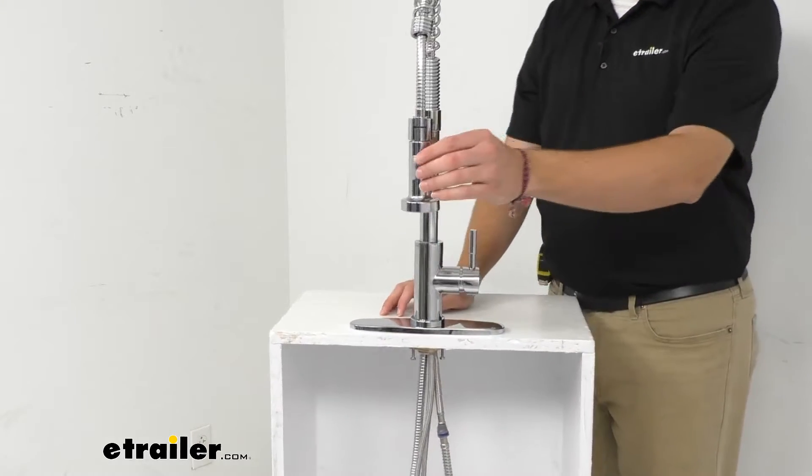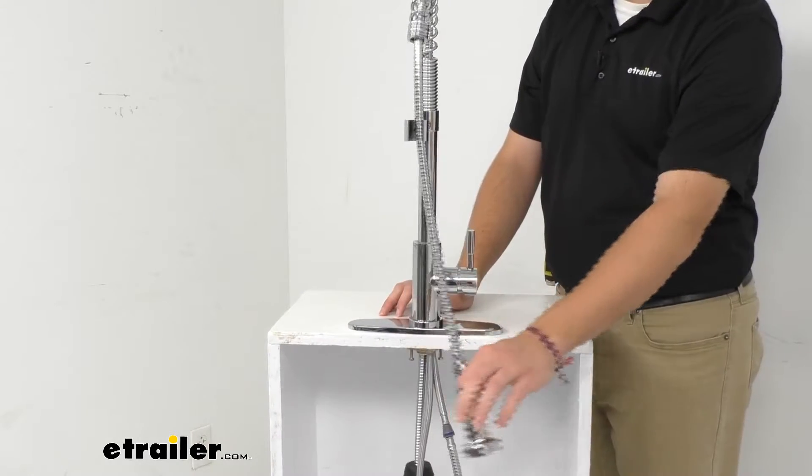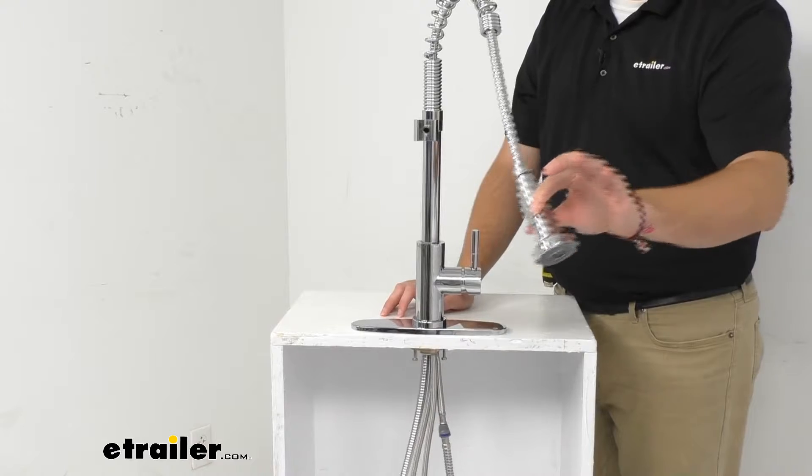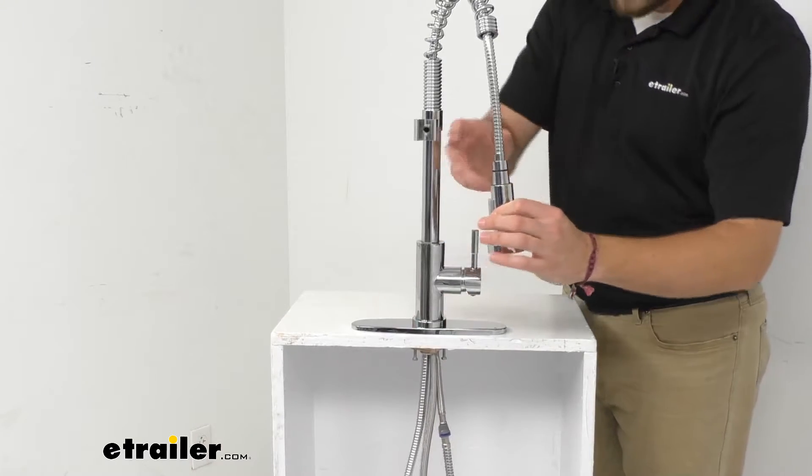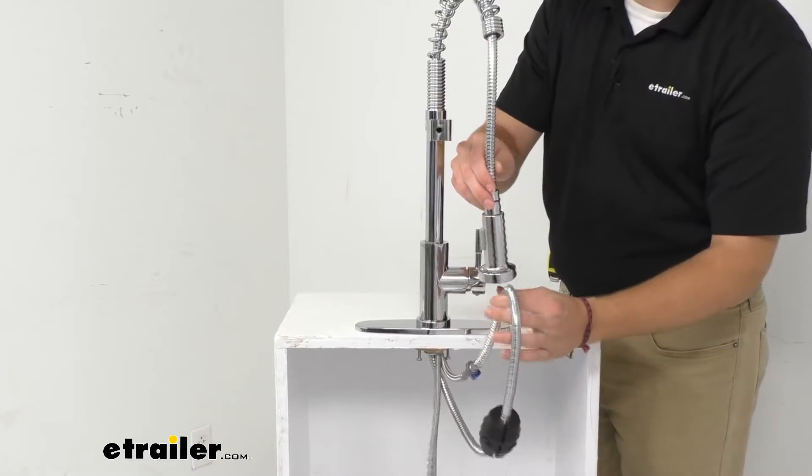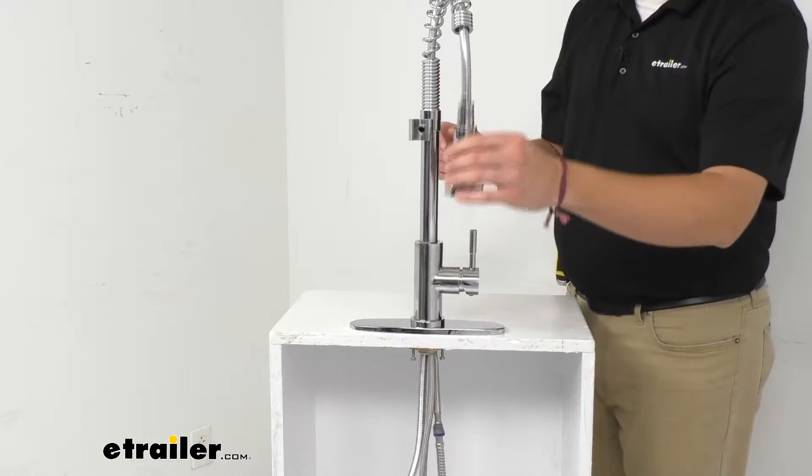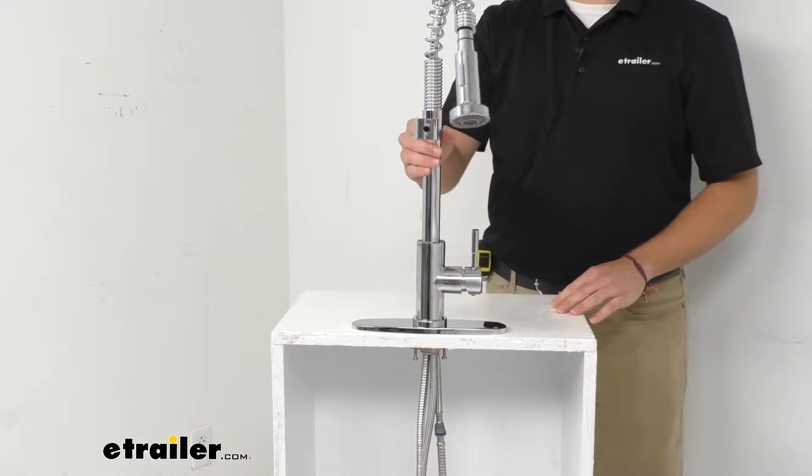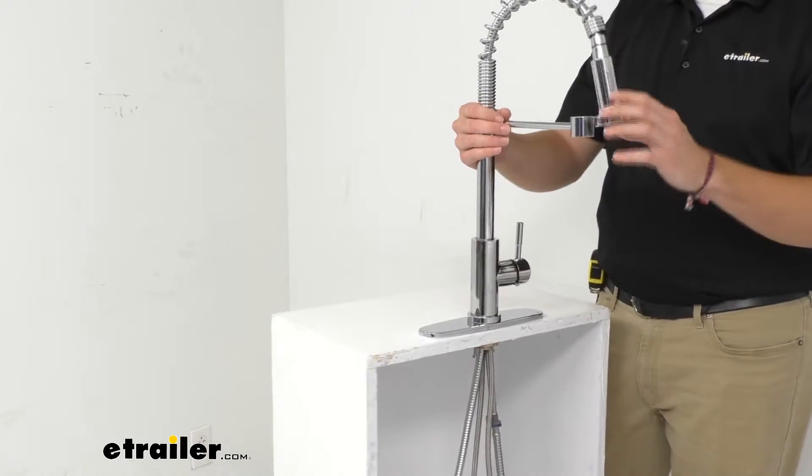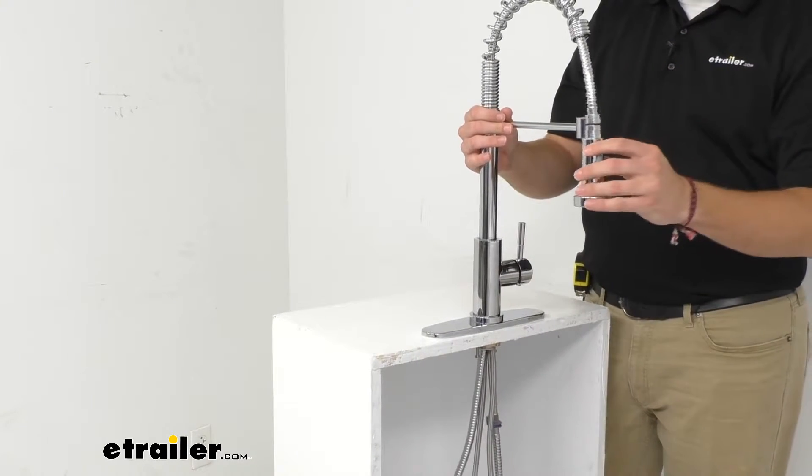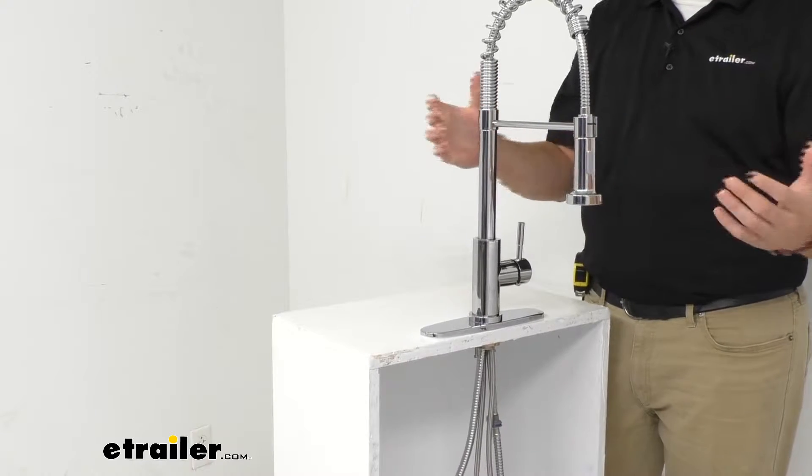Now, you will notice here we do have that drop-down spout, which can be great to give us a lot of access. One thing too, on the very end there, you are seeing a little weight. So as I pull this down, that weight's going to pull it right back up in place for ourselves. The one thing I will say with this is it does have this nice kind of stand here to put in our spout and bring it into position.